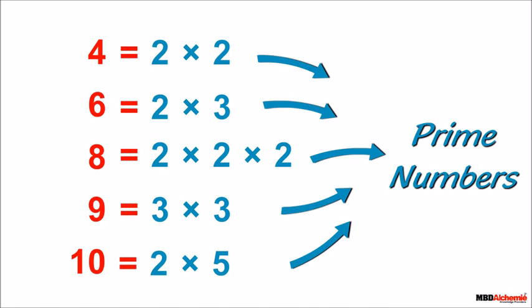Thus we can say prime numbers are building blocks of composite numbers. The process of writing prime factors of a number is called prime factorization. To write a number as the product of its prime factors, we must find the prime factors of that number.